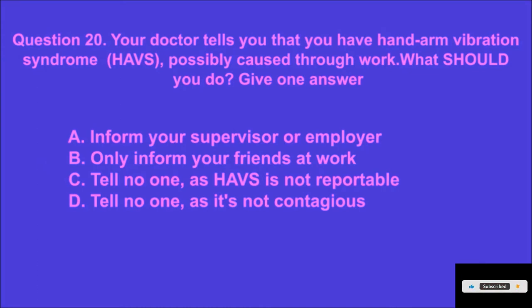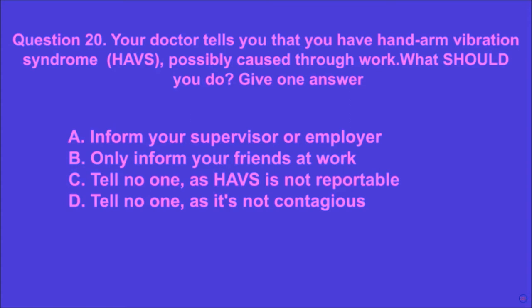Question 20: Your doctor tells you that you have hand arm vibration syndrome (HAVS) possibly caused through work. What should you do? Give one answer. A: inform your supervisor or employer, B: only inform your friends at work, C: tell no one as HAVS is not reportable, D: tell no one as it's not contagious. A is the correct answer.